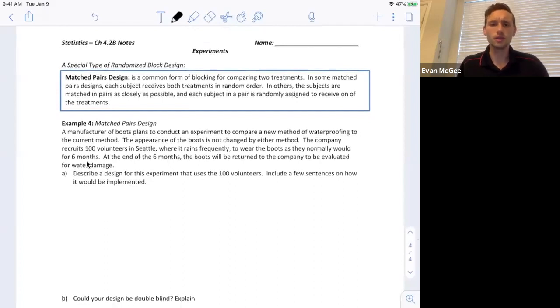So let's look at an example. A manufacturer of boots plans to conduct an experiment to compare a new method of waterproofing to the current method. The appearance of the boots is not changed by either method. The company recruits a hundred volunteers in Seattle where it rains frequently to wear the boots as they normally would for six months. At the end of six months, the boots will be returned to the company and evaluated for water damage. Describe a design for this experiment that uses the 100 volunteers. Include a few sentences on how it would be implemented.